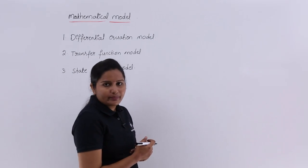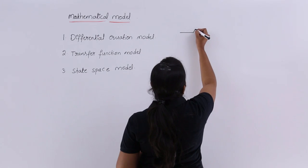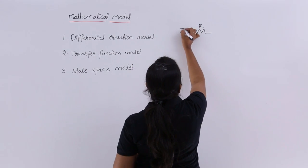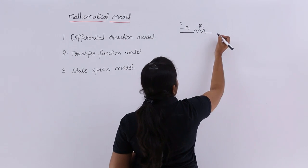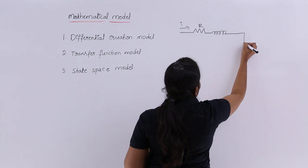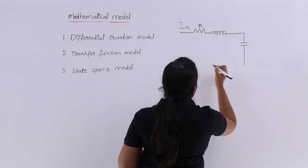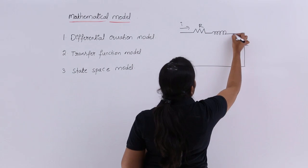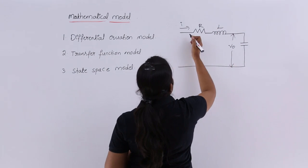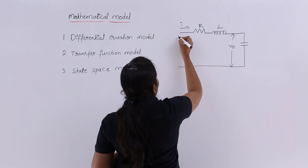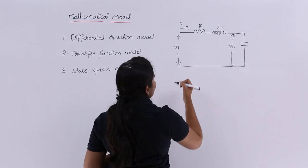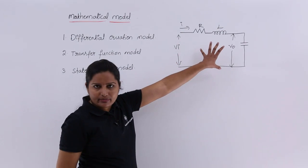For example, I am going to consider a system — an RLC network. This is R, and the current passing through it is I. Here I have an inductor L and a capacitor C. The output voltage is across the capacitor, and the input voltage is Vi.